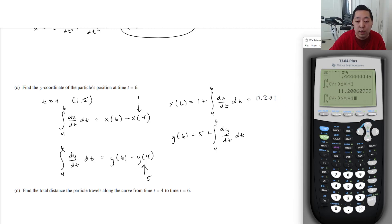And then we'll just do the same thing, but now we'll do it with the y variable. And we're going to add 5 to it this time. 11.571. So the position particle is 11.201, 11.571.